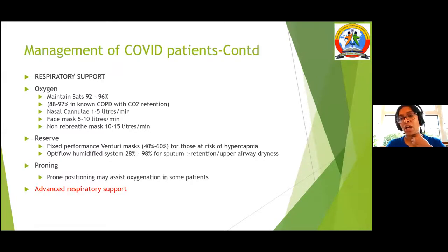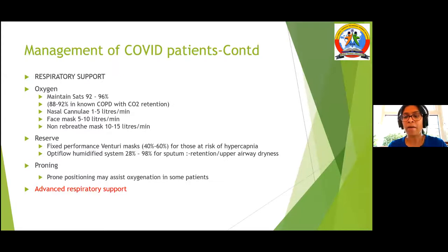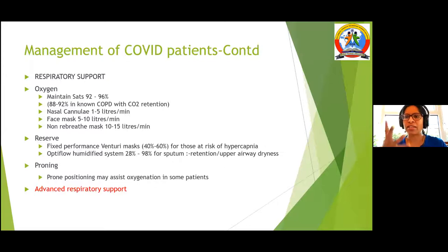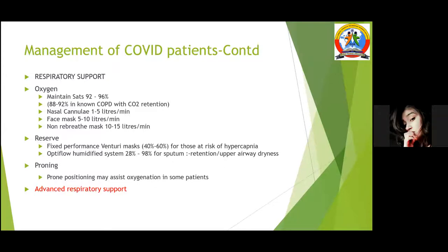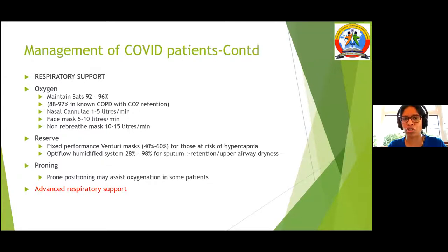In COPD patients, we tolerated 88 to 90%, sometimes even 85% — we didn't go higher than that. Patients were kept on nasal cannulae at one to five litres. When we had a decline in oxygen supply, we used a machine called an oxygen concentrator, which sucked room air and concentrated oxygen to deliver up to five litres via nasal cannula. For patients requiring a face mask or non-rebreathing mask, COPD patients were strictly on a Venturi mask.